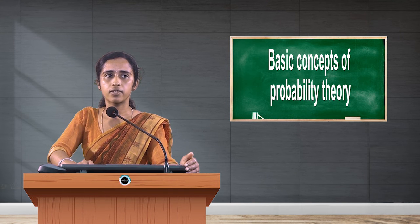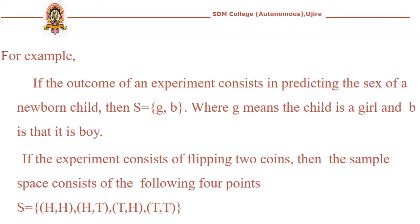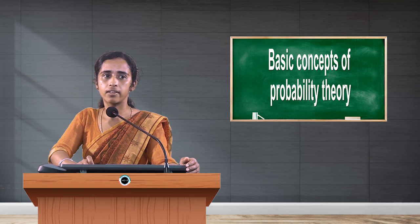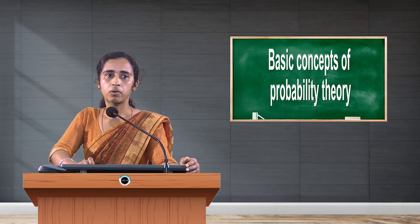For example, if the outcome of an experiment consists of predicting the sex of a newborn child, then S = {G, B}, where G means the child is a girl and B means it is a boy. If the experiment consists of flipping two coins, then the sample space consists of four points: HH, HT, TH, and TT. The set of all these outcomes is called the sample space, and each element is called a sample point.